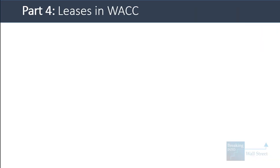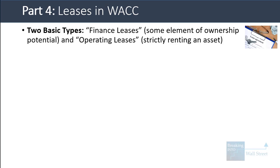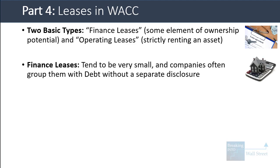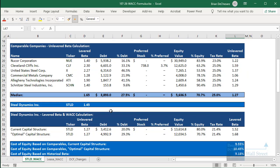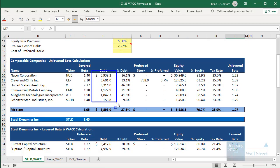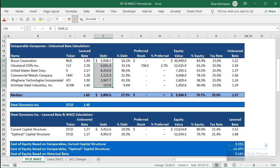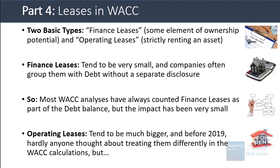Let's now go into part four and examine leases in WACC. There are two basic lease types: finance leases and operating leases. Finance leases tend to be very small, and companies often group them together with debt without a separate disclosure. Most WACC analyses have always counted finance leases as part of the debt balance, but since they're so small, their impact has been minimal. Operating leases, though, tend to be much bigger, and before 2019 no one really thought about treating them differently in the WACC calculations because they were off balance sheet.